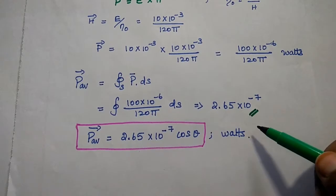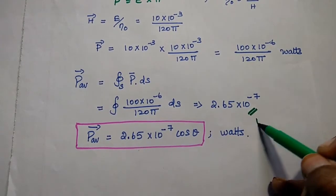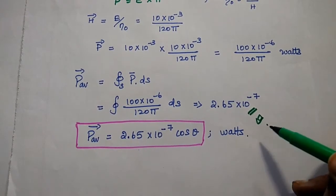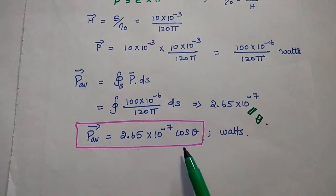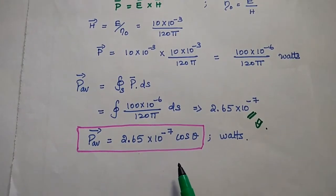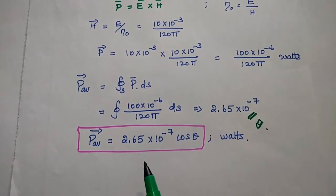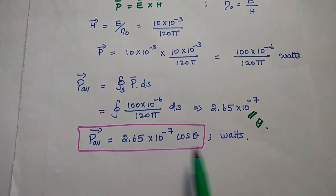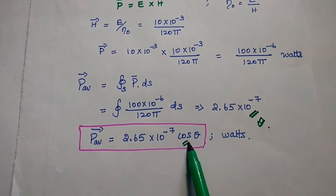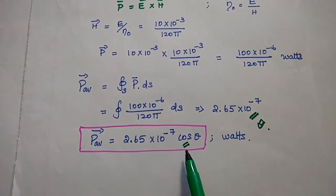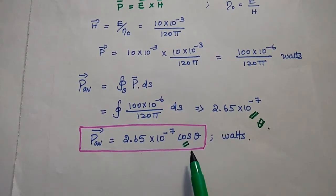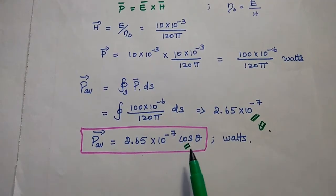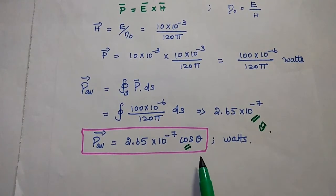In this problem, the plane wave propagates through free space at an angle theta with respect to the normal to the plane. Since the wave travels at angle theta relative to the normal, we include a cos theta factor in the power flow calculation. Therefore, the average power is 2.65 × 10⁻⁷ · cos θ.